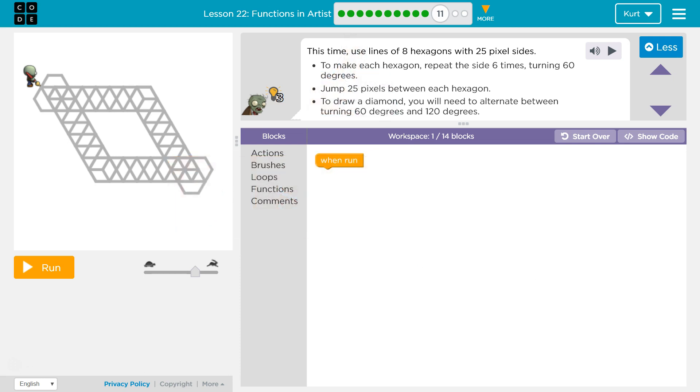This time using lines of eight hexagons with 25 pixel sides. Oh my goodness, it's like a complicated diamond. The last one was complicated enough to make each hexagon repeat the side six times turning six degrees. That's a good hint.